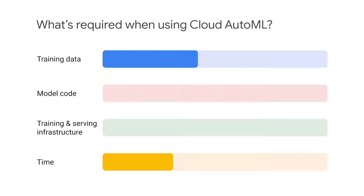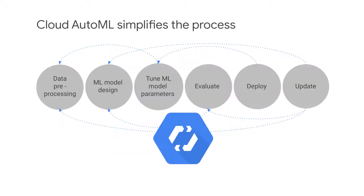What's immediately notable with Cloud AutoML is that there's no requirement on the user's side to develop a model or provide a training and serving infrastructure. In addition, far less training data is required, and the results are achieved a lot faster. The ability of Cloud AutoML to efficiently solve an ML problem is largely due to how it simplifies these complex steps that are associated with custom ML model building.